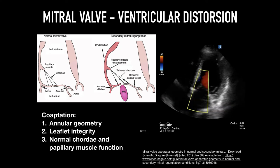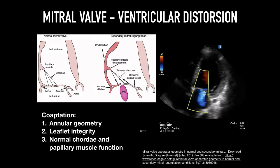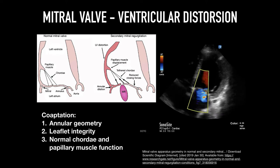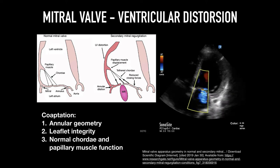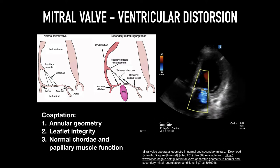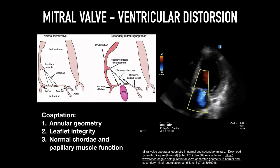Coaptation represents the integrity of two leaflets well opposed together, preventing reflux of blood into the left atrium. It depends on three major features. One is annular geometry, which depends on the ventricular size and atrial size in relation to one another, as well as wall motion. Number two is leaflet integrity.